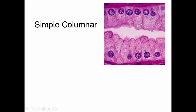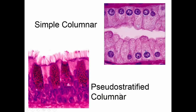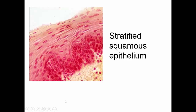Simple columnar cells will have a rectangular shape to them. Notice it's really easy to see that this is a single layer because all the nuclei are lined up in a row. This is a pseudostratified columnar — the nuclei are jumbled up and it looks like there might be more than one layer, but if you could trace every single cell to the bottom, you would see it's only one cell layer thick. These cells are a little strange in shape, broad at the top and skinny at the bottom or vice versa. And then this is a stratified squamous epithelium — the cells are flattened and there are several layers.